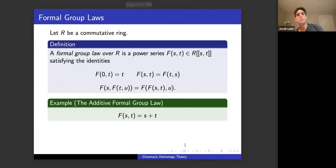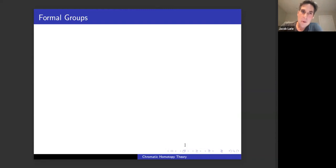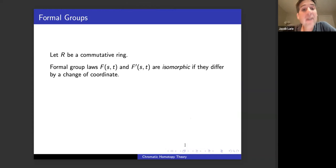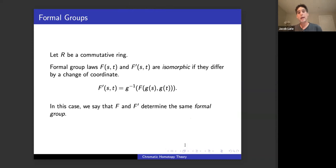A formal group law over a commutative ring R is a power series in two variables with coefficients in R satisfying the commutativity and associativity identities from the previous slide. The easiest example is F(S,T) = S + T, the additive formal group law. The next easiest is F(S,T) = S + T + ST, the multiplicative formal group law. If two formal group laws over R differ by a change of coordinates — that is, there's an invertible power series G such that conjugating by G converts F into F' — we say they're isomorphic and have the same associated formal group.